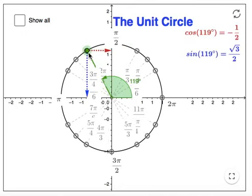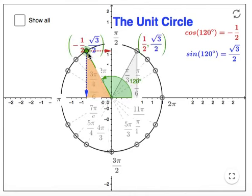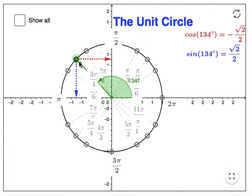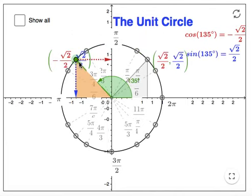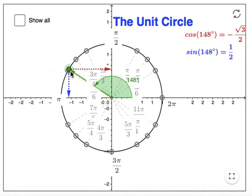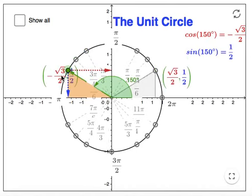If we go to that angle here, it's symmetrical to this one. The root 3 over 2, which is our vertical height and also our sine value, is going to be the same. The x is just going to be opposite when we get to this point. The verticals are the same but the horizontals are opposite — the cosine values are opposite. Here we have the 30-60 triangle again, the same principle.